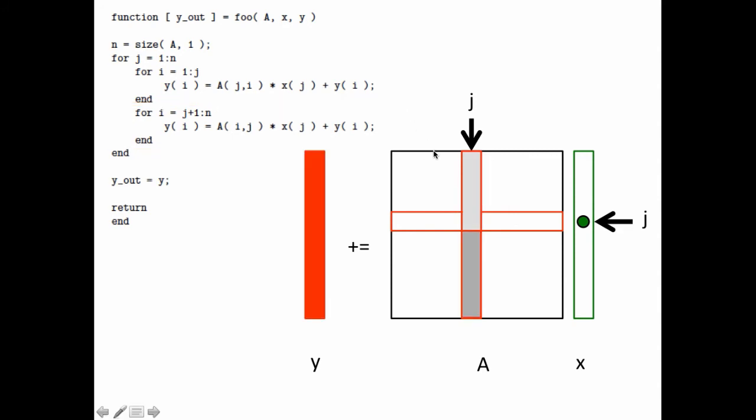Now if you look carefully at what we do, we multiply the jth column of A by the jth element of x. We add that to the vector y. The only thing is part of the jth column of A we really address as the first part of the jth row of A. And this is where the symmetry in the matrix comes in. So it appears that we're working with a symmetric matrix where the entries of the symmetric matrix are only stored in the lower triangle.